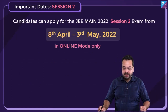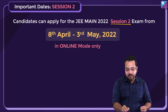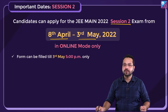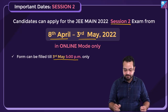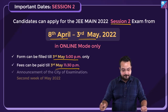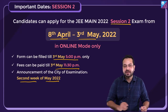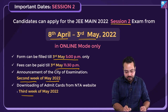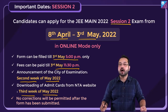You can apply for JEE Main 2022 Session 2 exam between 8th April to 3rd May 2022, again in online mode. Forms can be filled till 3rd May 5 p.m. and fees can be paid till 3rd May 11:30 p.m. The announcement of city of examination is going to be in the second week of May 2022, and admit cards can be downloaded in the third week of May. Again, no corrections are permitted.